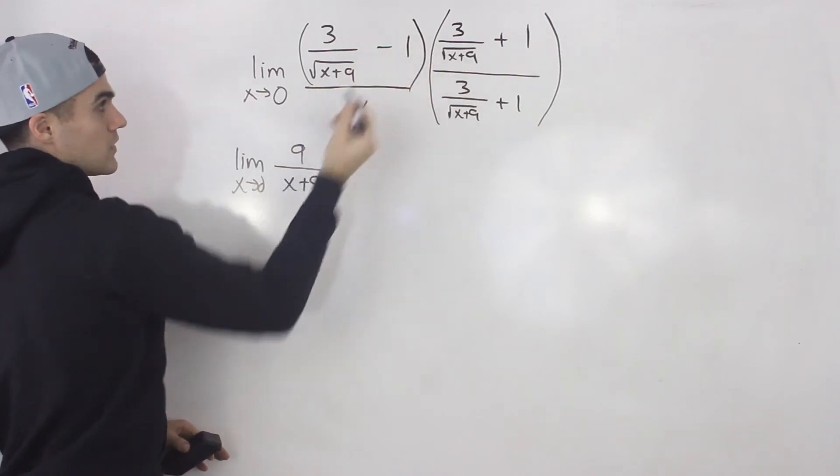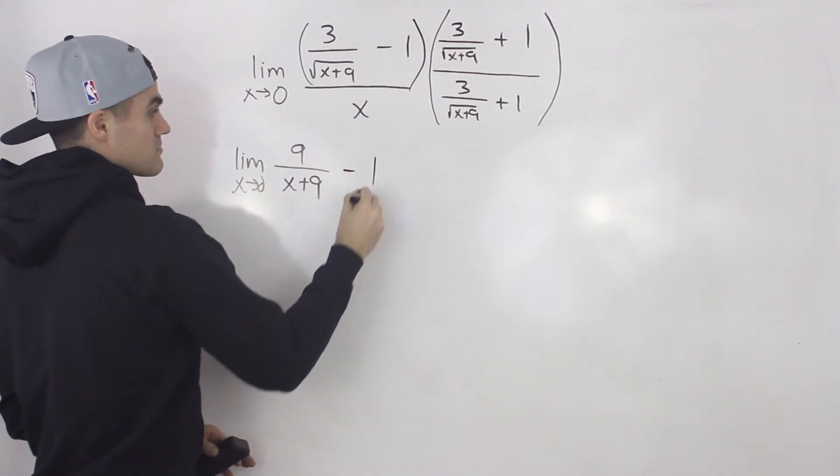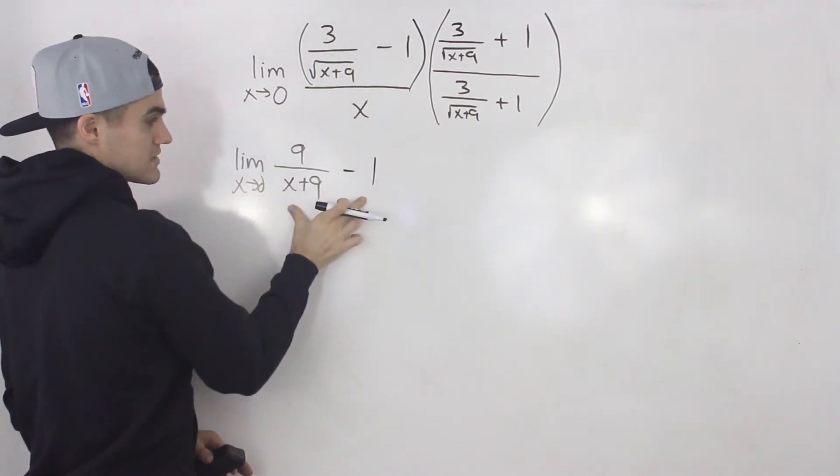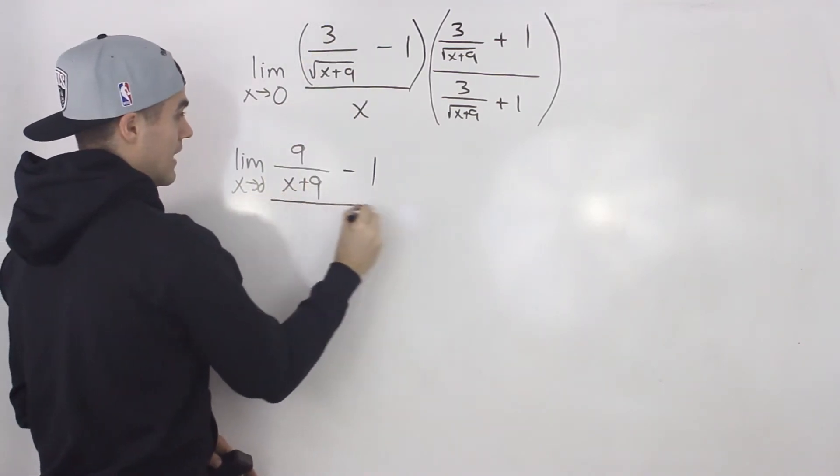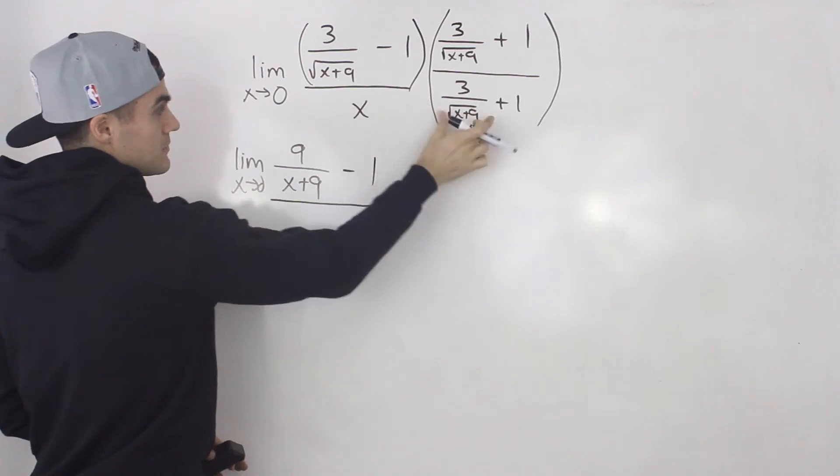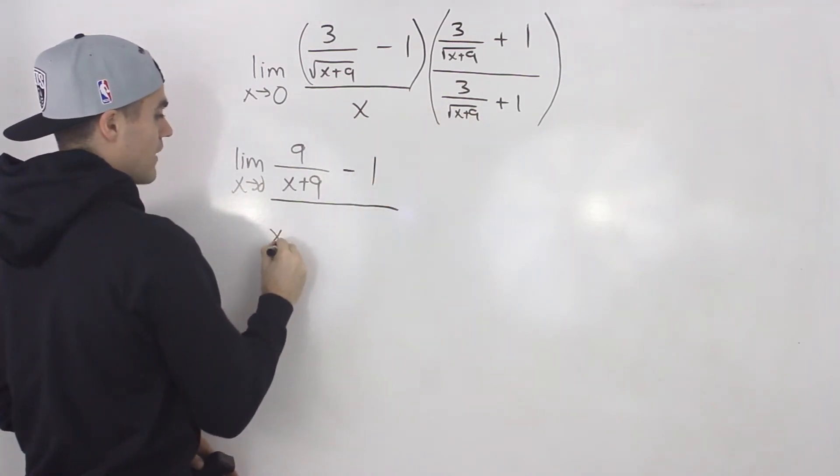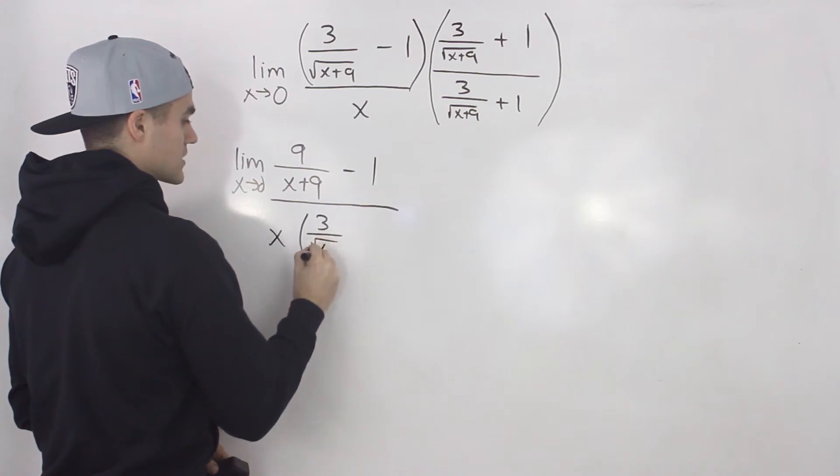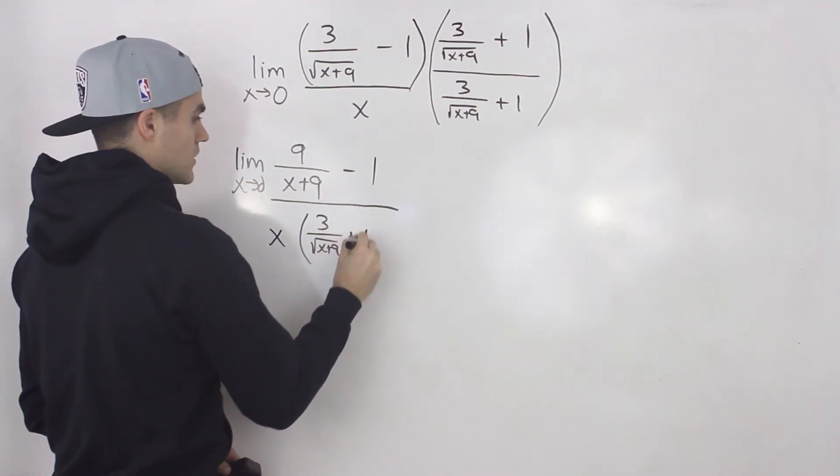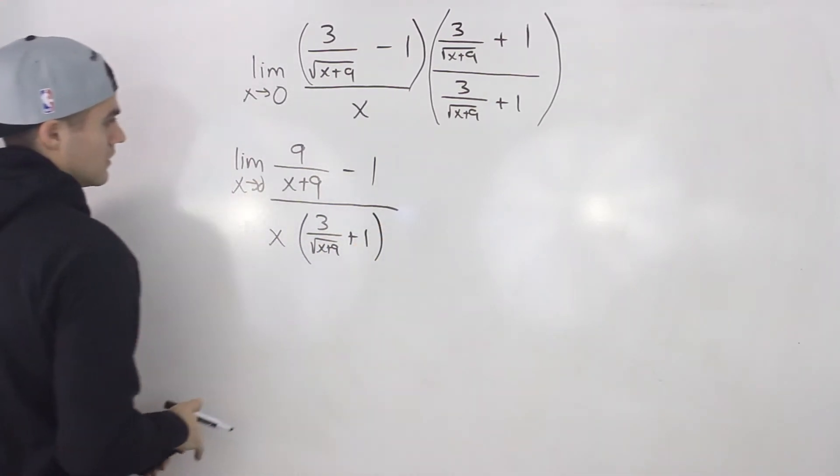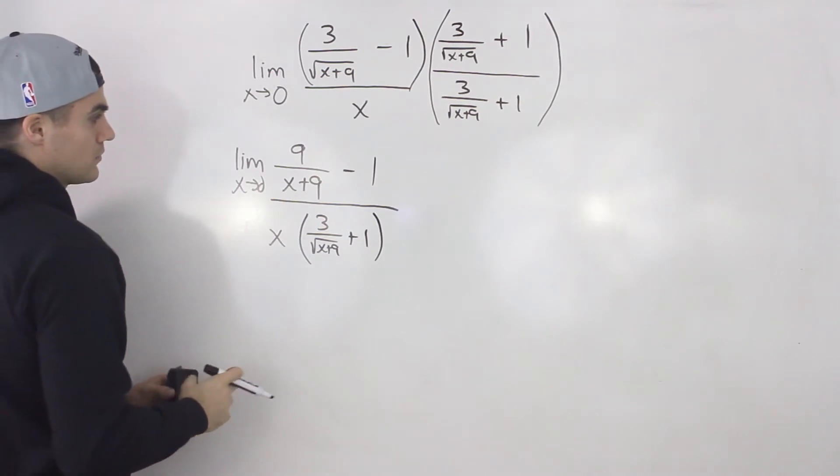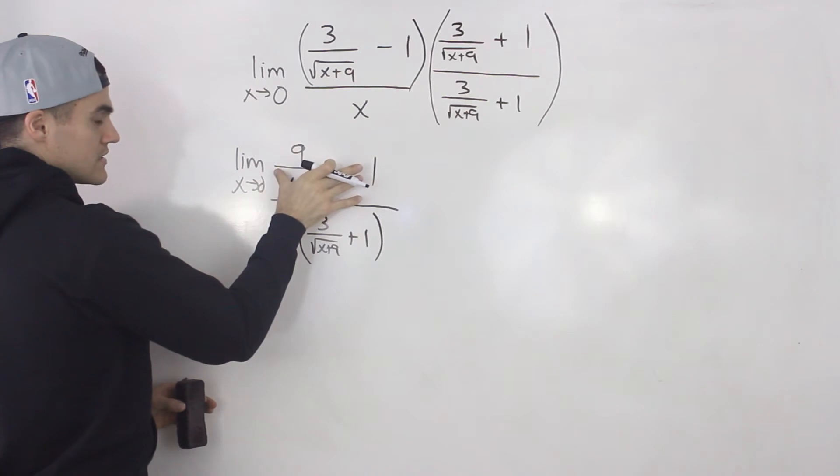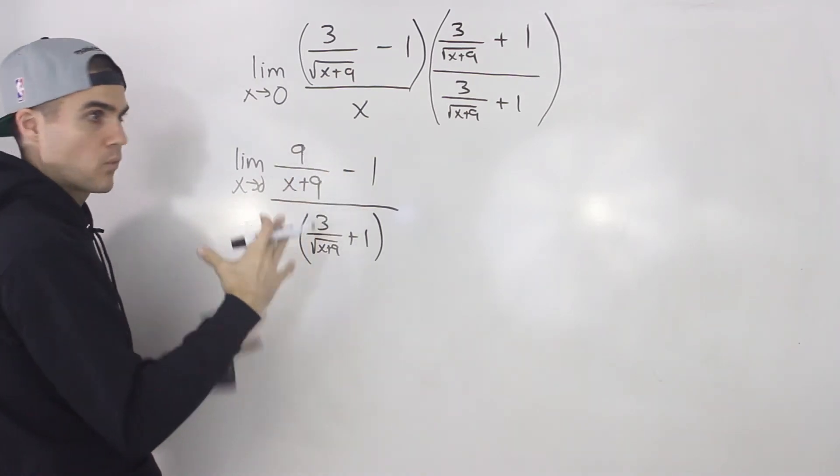And then minus 1 times positive 1, that just gives us minus 1. So notice that we change the numerator into this. And then the denominator, let's keep these two terms separately. So we'll have x times 3 over the square root of x plus 9 plus 1. So now what we can do is we can try to get this numerator as one fraction.